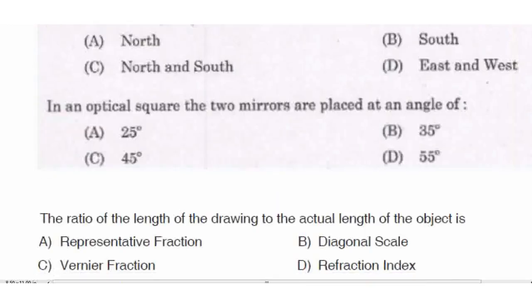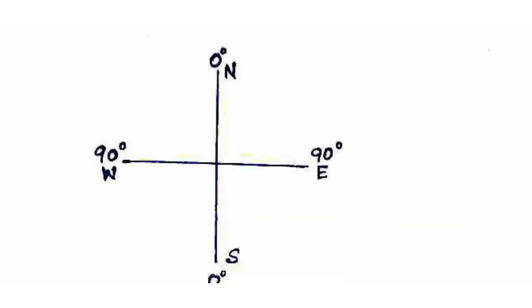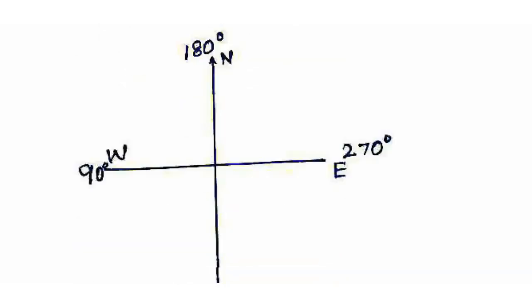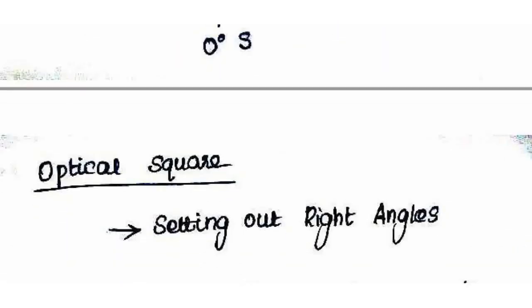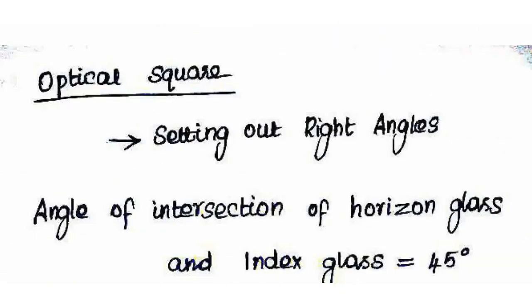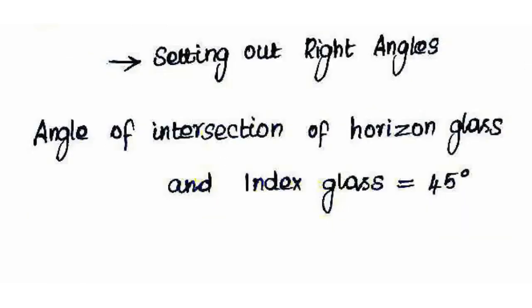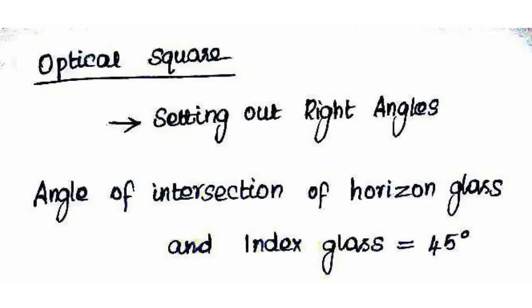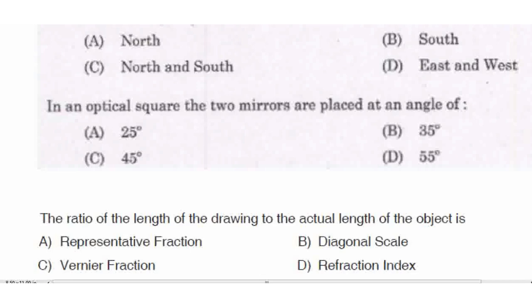Next question: in an optical square, the two mirrors are placed at an angle of 45 degrees — right answer Option C. The optical square is used for setting out right angles. The angle of intersection of the horizontal glass and index glass is 45 degrees.